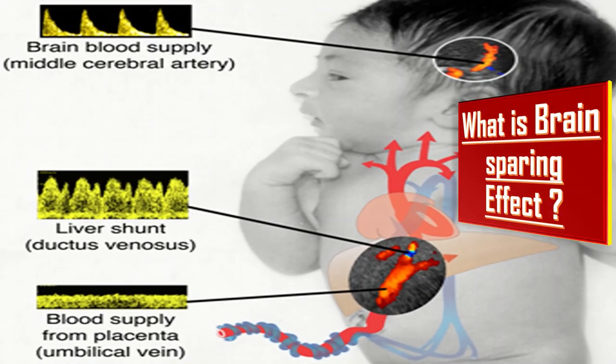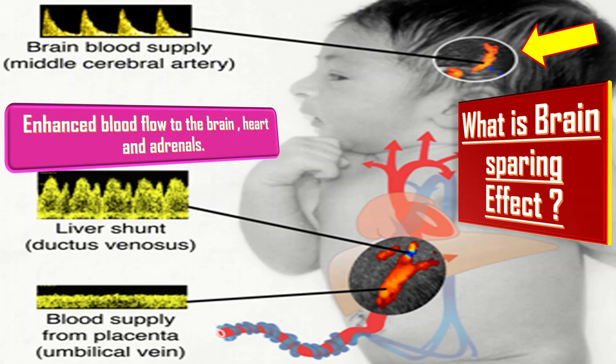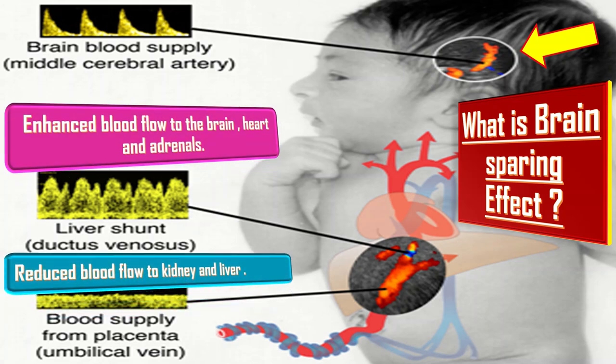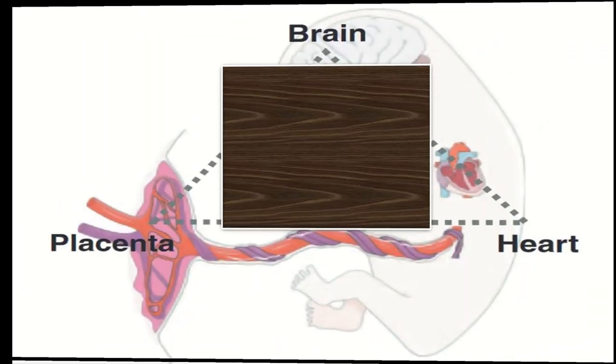What is the brain sparing effect? Cerebral circulation is sensitive to changes in carbon dioxide and oxygen. As placental function worsens and hypoxia ensues, compensatory vasodilation of cerebral circulation results in enhanced blood flow to the brain, heart, and adrenals, and reduced blood flow to the kidney and liver. This is called the brain sparing effect.